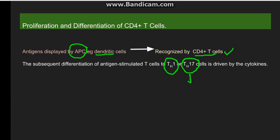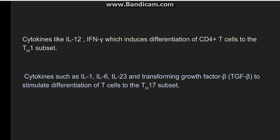The TH17 cell mostly leads to recruitment of neutrophils and monocytes, while the TH1 cell activates macrophages for inflammation and clearing of the antigen.